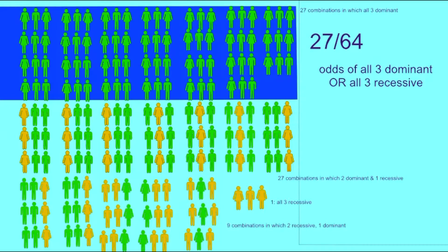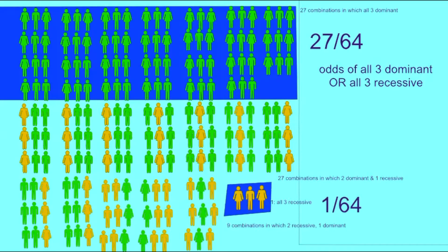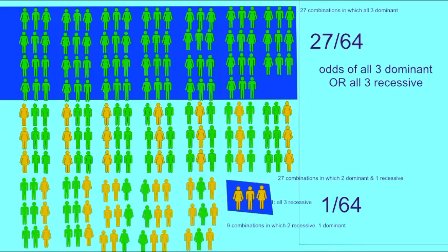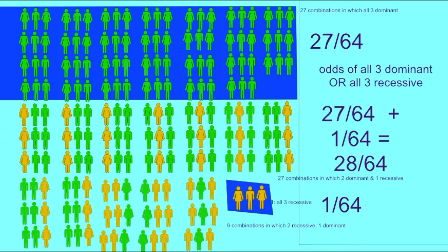And add it to the odds that all three would have the recessive trait, which is 1 over 64. So the odds that either all three would have the dominant trait or the recessive trait would be 28 over 64.